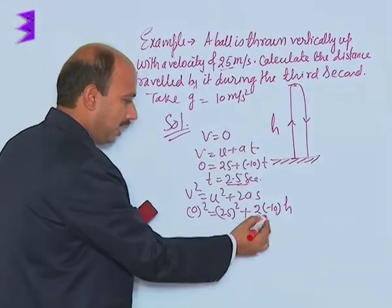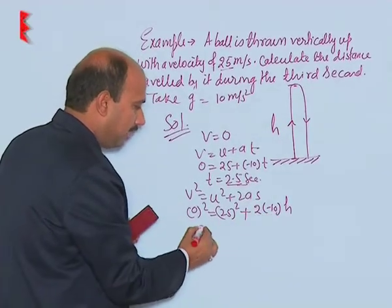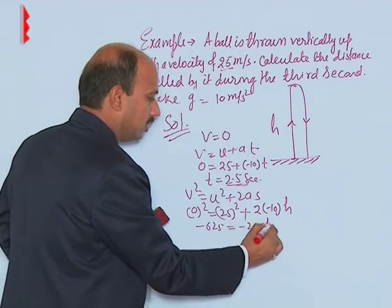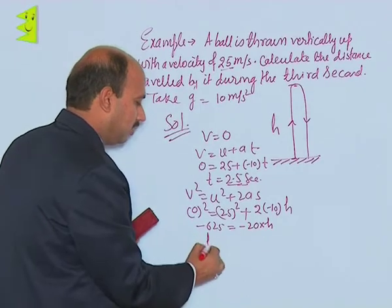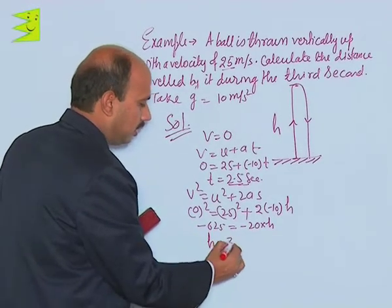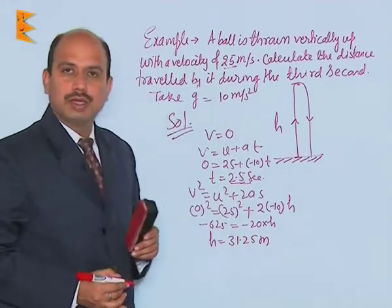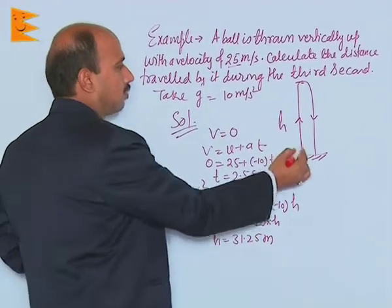We can write minus 625 equals minus 20h, and h equals 31.25 meters if you calculate. So this is the maximum height.